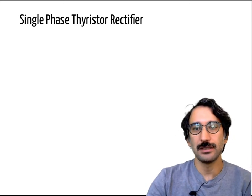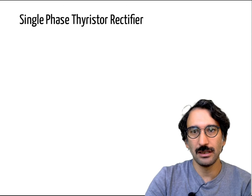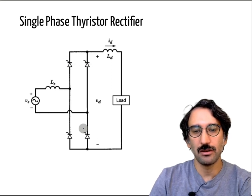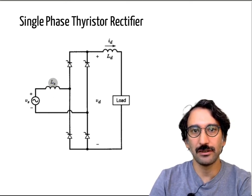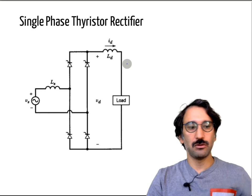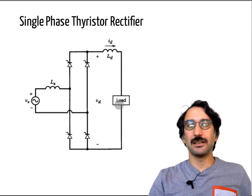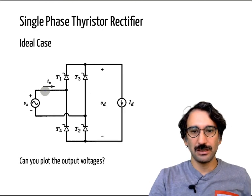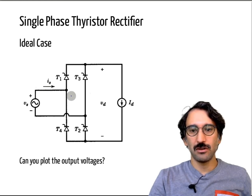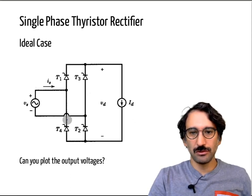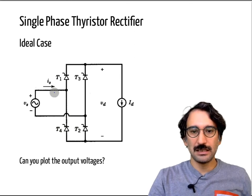Now let's talk about the single-phase thyristor rectifier. It is like a diode rectifier but we have four thyristors connected. In a more general case we have the line inductance, and also we can have some inductance as the load. If that inductance is large enough, we can model the secondary like an ideal current source. In our first simulations, the inductance on the grid side is ignored and we have an ideal current source.